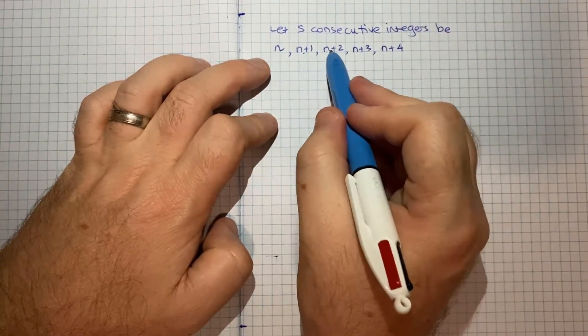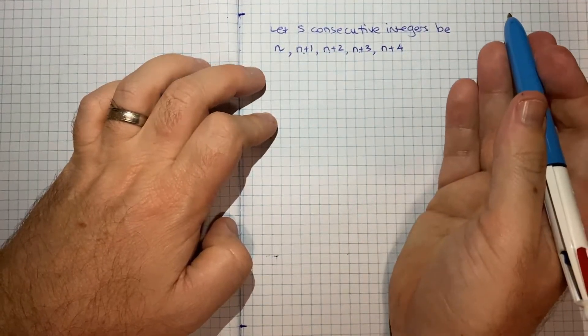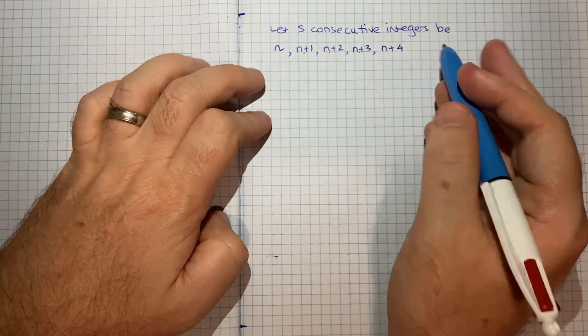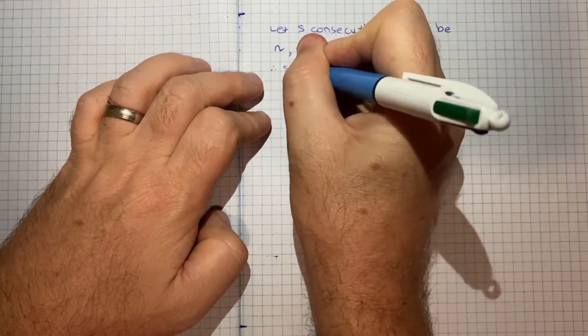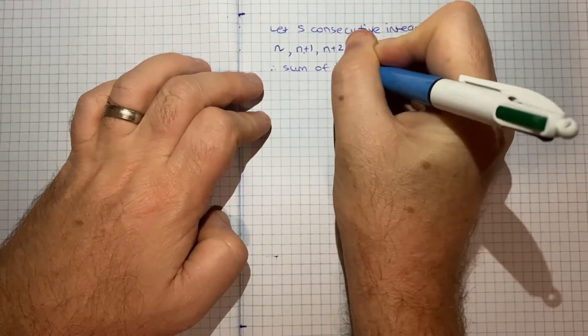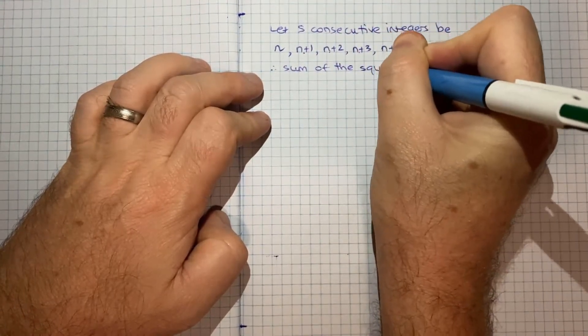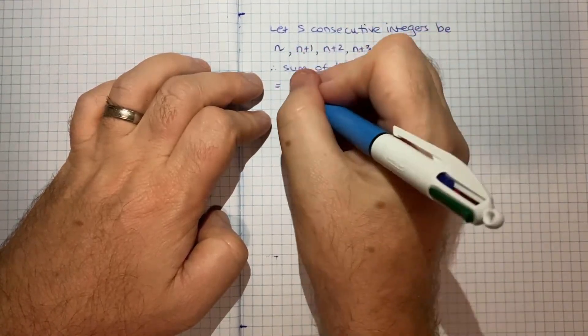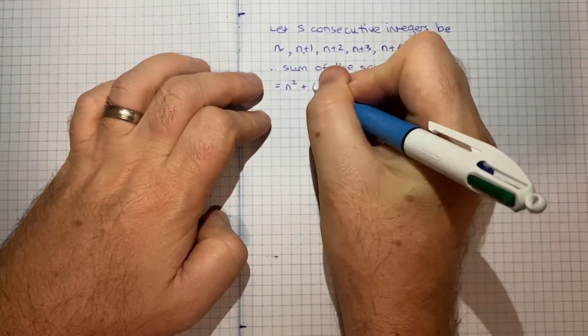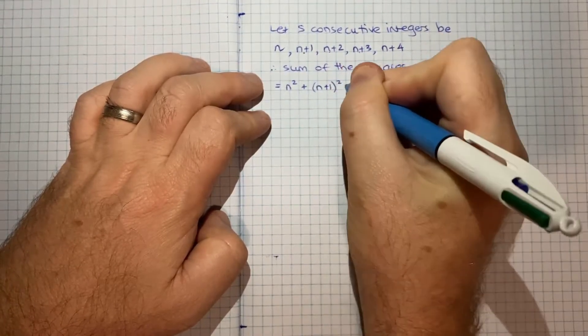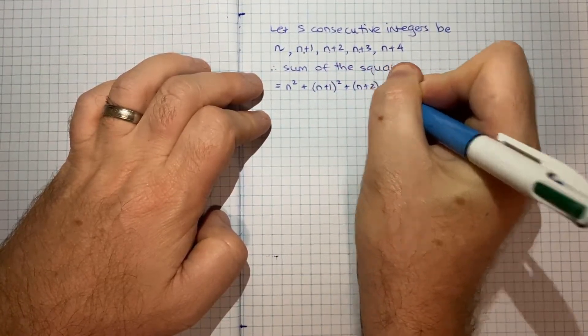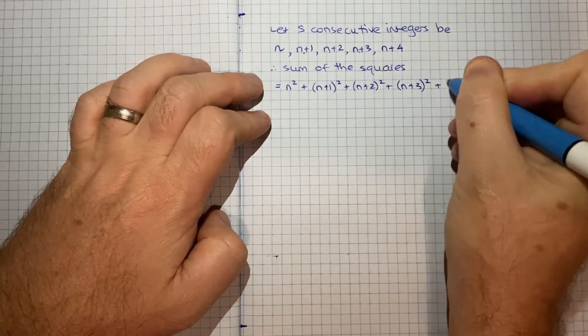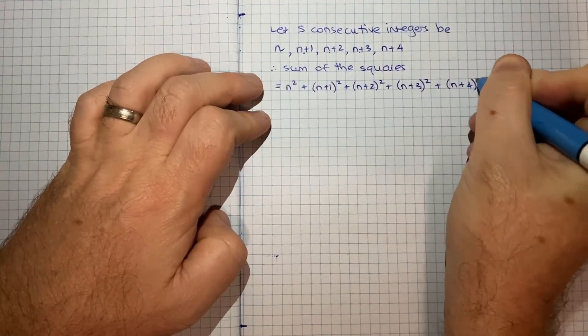So that's one, two, three, four, five integers. And we're asked to think about the sum of the squares. So what that means is the sum of the squares of those integers would be equal to n squared plus n plus one squared plus n plus two squared plus n plus three squared plus n plus four squared.